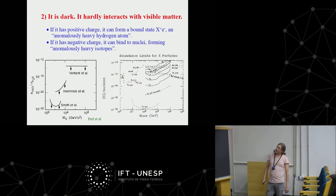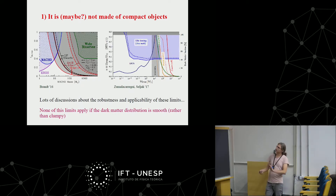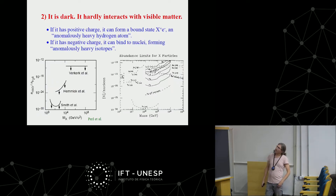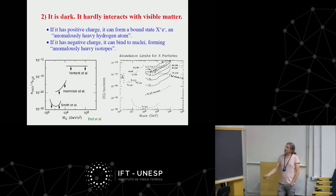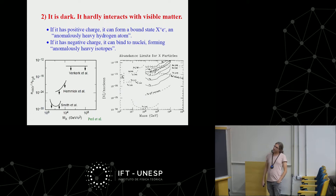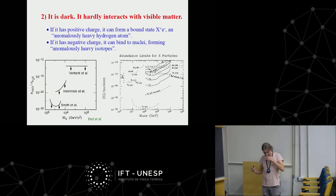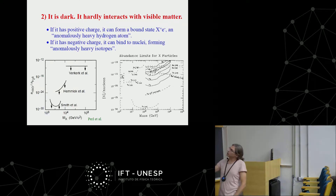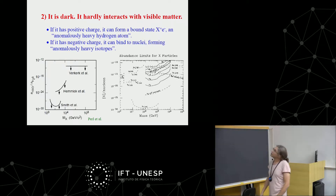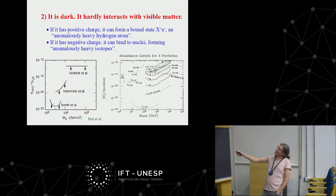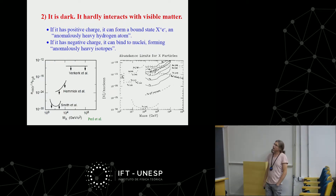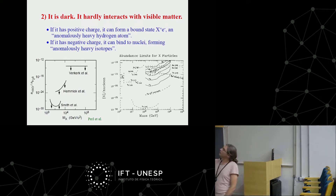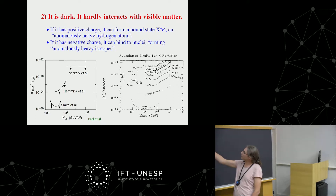For the purposes of this talk, dark matter is a particle. The second thing we know is that dark matter particles are dark — they hardly interact with visible matter. If dark matter were positively charged, it would not be free in the universe; it would form a bound state with an electron, making an object chemically identical to hydrogen but enormously heavier — a hydrogen atom where the proton is replaced by a very massive particle X.